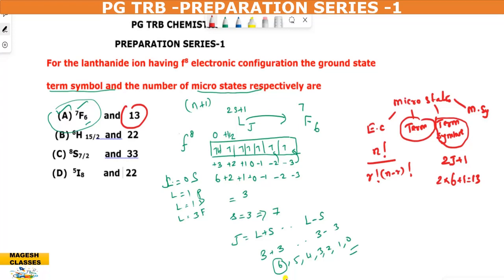That is the case of term. Term symbol is different. Term symbol is constituted with this J value. Term is the same. This symbol is 7F6. So that is the microstate. Term symbol is different. J value is the total angular momentum value.